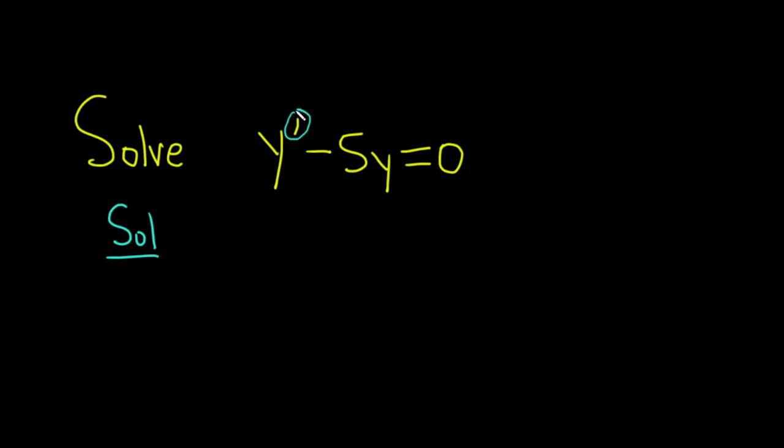So because this is the first derivative, we write down r to the first power, so just r. And then here y is the zeroth derivative, so we don't write down the y. We set this equal to 0 and we solve.